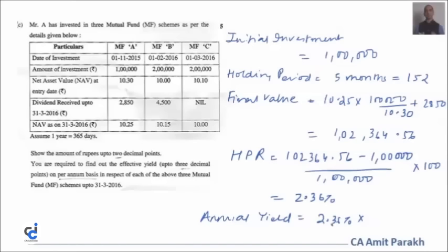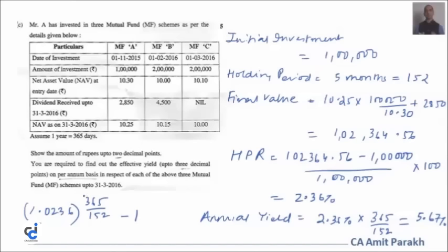To annualize on simple interest basis: 2.36% × 365/152 ≈ 5.67% per annum. Alternatively on compound interest basis: (1.0236)^(365/152) − 1 × 100 gives a very similar effective annual yield. Both approaches yield approximately 5.67%.